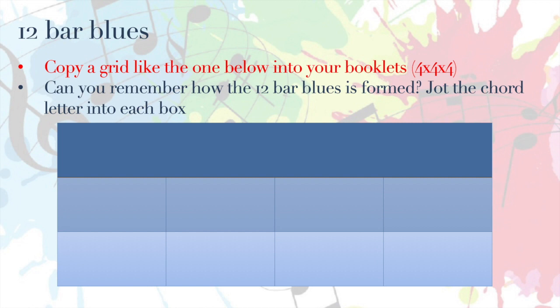What I need you to do now is copy a grid like this one into your booklet, onto your piece of paper. It's four squares across the top, four squares in the middle, and four squares on the bottom. Of course, if you're using lined paper, you might just prefer to put three lines down the lines and then a little box around them. Then what I need you to do is jot the chord letter into each box. Can you remember what the chords were? I'm just going to give you 30 seconds to have a think about it — pause the video here, and then we'll go through the answers.